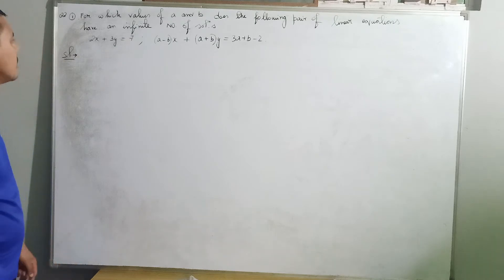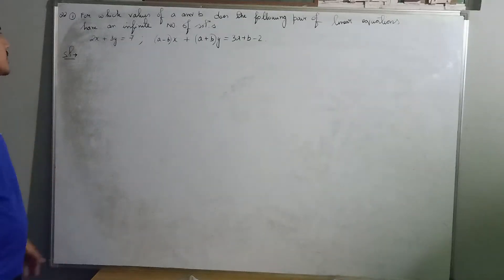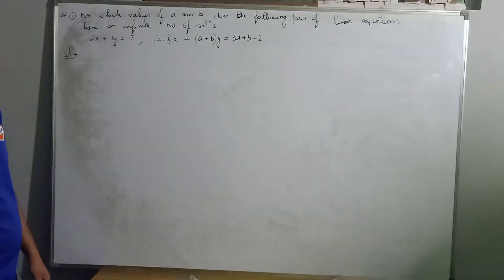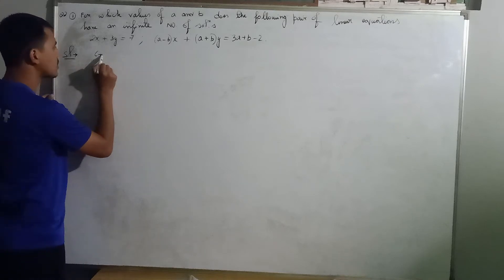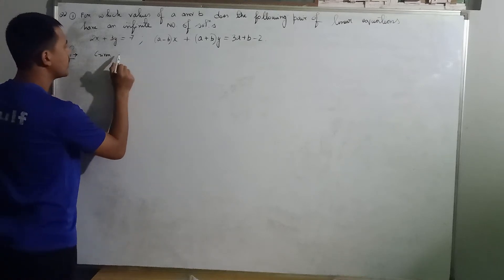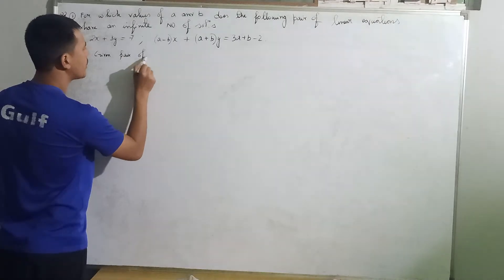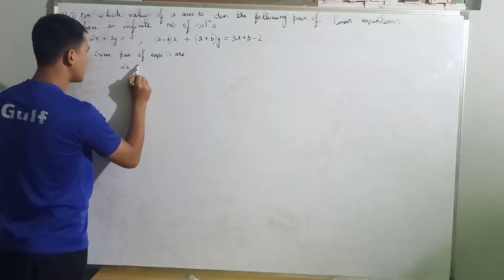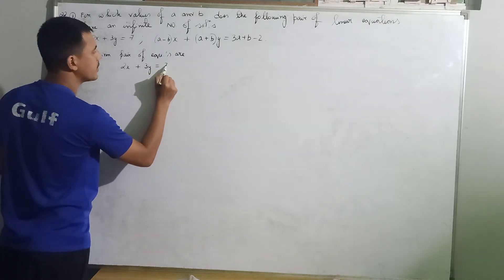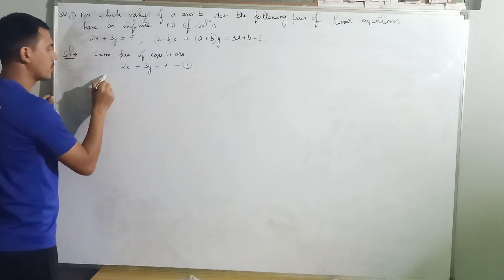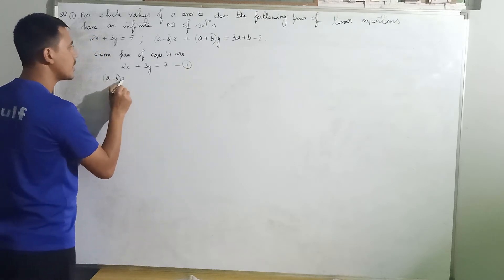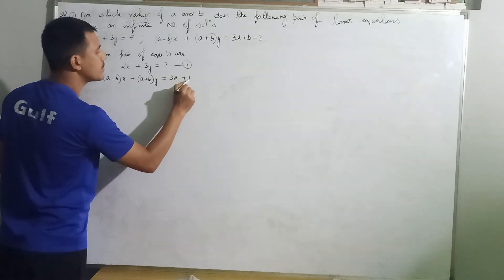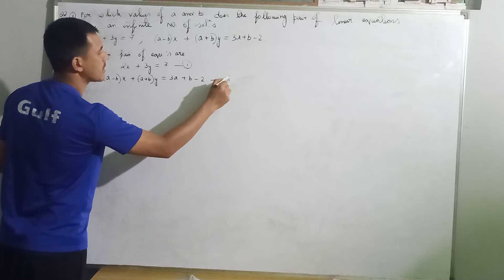So, we have to find A and B, and the given condition is that this pair of linear equations has an infinite number of solutions. The given pair of equations are: 2x plus 3y equal to 7, that is your first given equation, and A minus B times x plus 3A plus B minus 2, that is your second given equation.